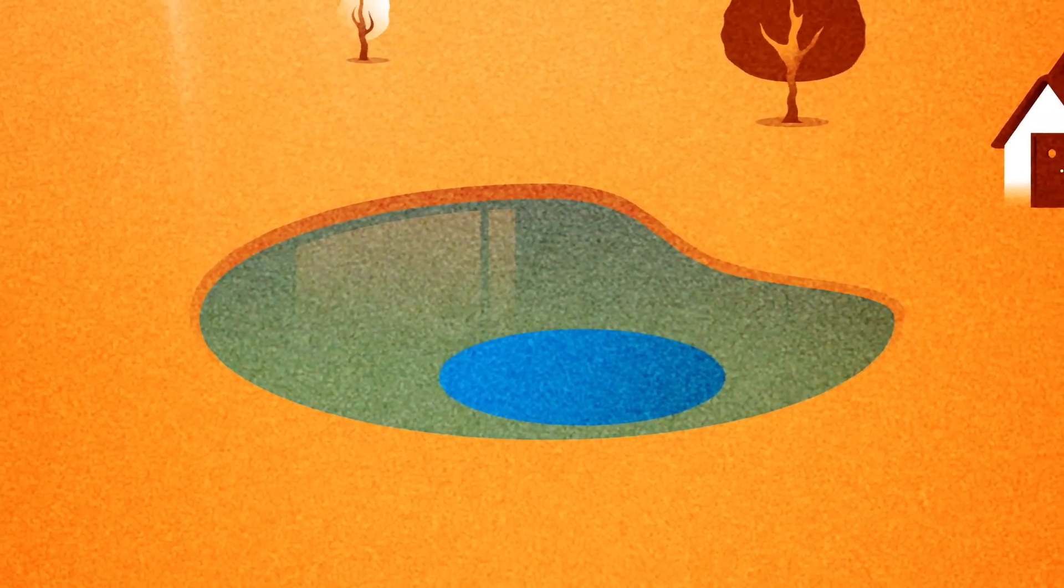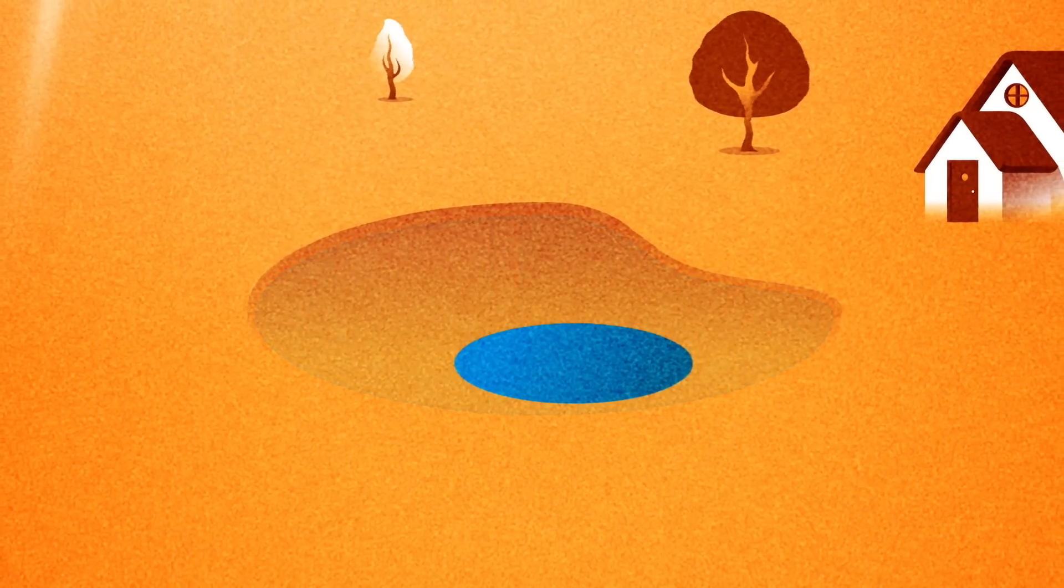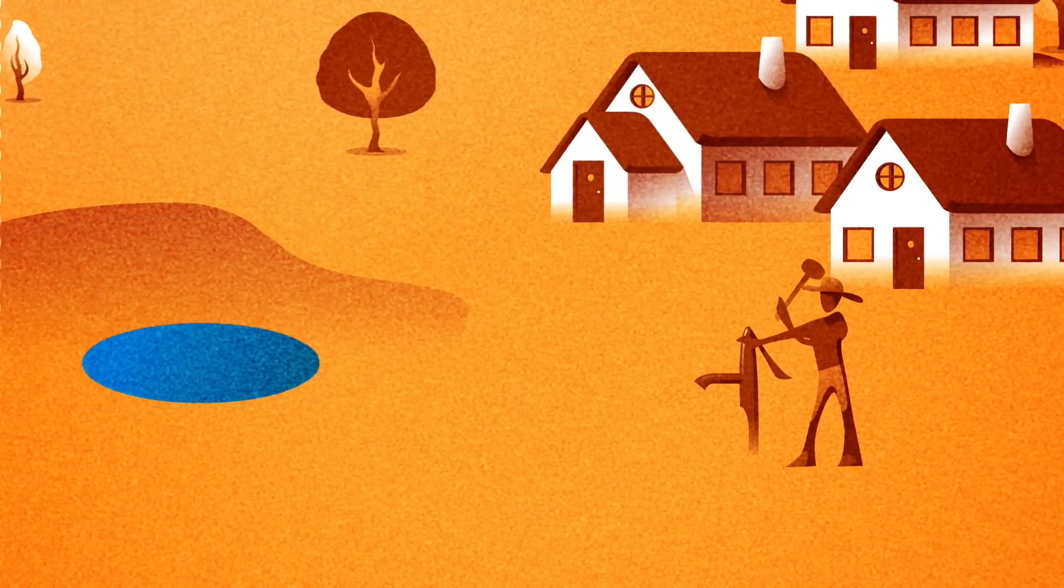With a drought, there is less surface water, which leads communities to depend more and more on groundwater. But how can they know how to use it sustainably?